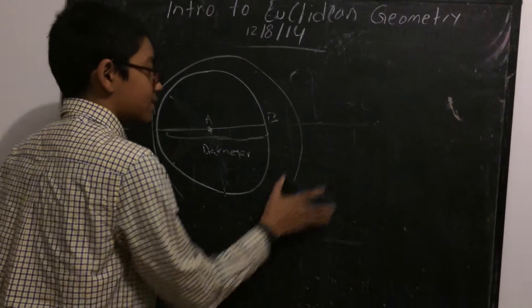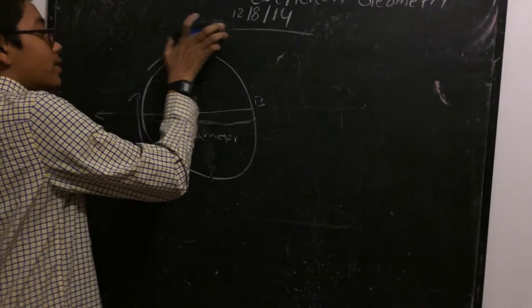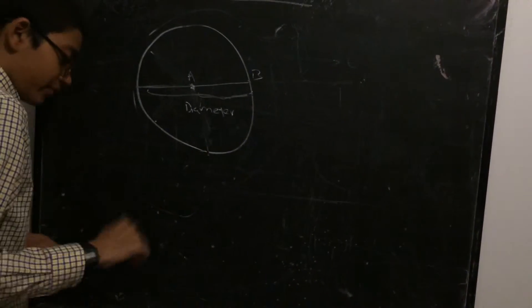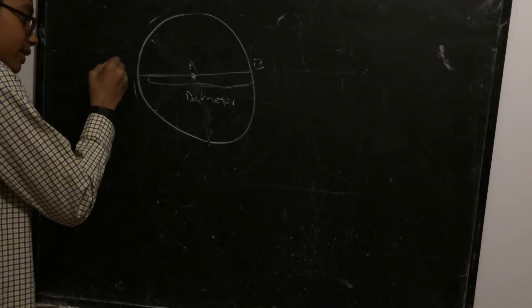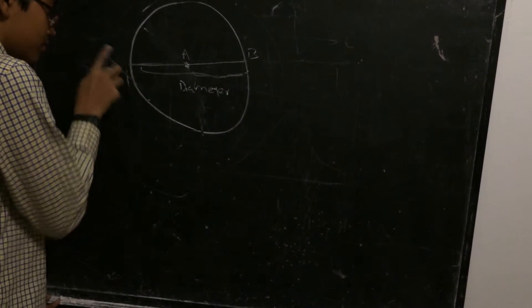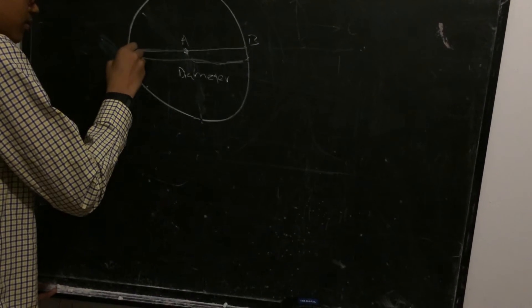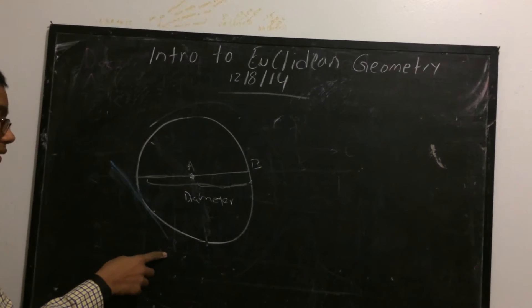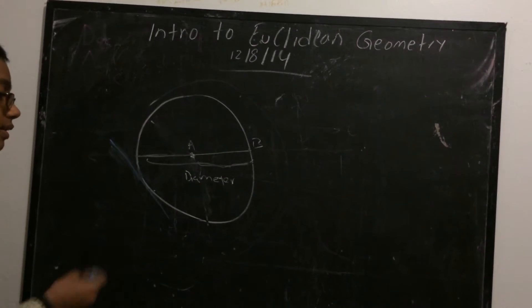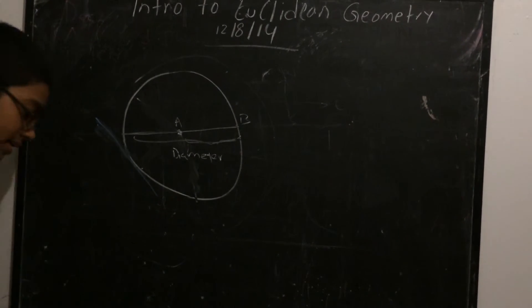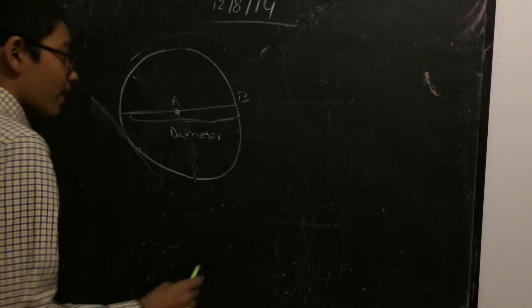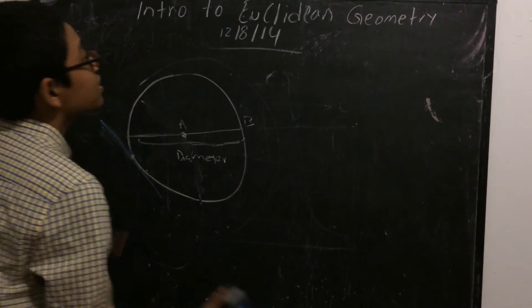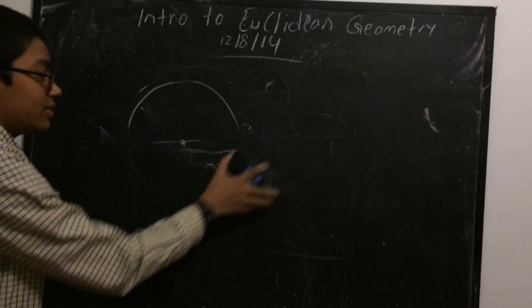And when a line intersects the circle at any one point on the circle, let me draw it out. For example, if you have a line, and I'll use the blue color to indicate it. So, let's say this is line L. Line L is tangent to this circle, because line L intersects the circle at this point. So, that was a basic introduction to Euclidean geometry, and that's it.